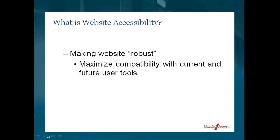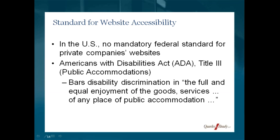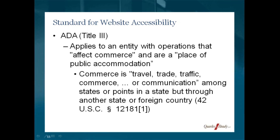In the United States, there is no mandatory federal standard for private companies' websites. What we have is the Americans with Disabilities Act, which prohibits disability discrimination. In particular, Title III, which deals with public accommodations, is used to set informal legal standards for website accessibility. The ADA lists more than 50 types of places of public accommodation — restaurants, hotels, inns, parks, private schools, bus depots, train stations — but nothing about the Internet or electronic spaces. The ADA was passed in 1990, when the Internet was not common, and though it was amended in 2008, nothing was done to clarify whether it applies to websites.